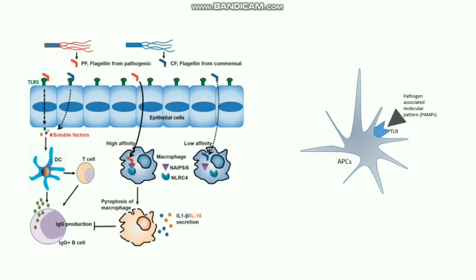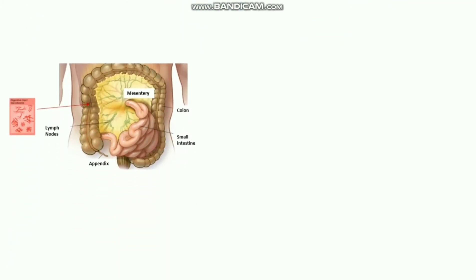Before that, we need to know a little anatomy — exactly where this gut microbiota is located. Here is the large intestine and the digestive tract, and in this digestive tract in the large intestine there are trillions of microbiota. Here is the mesentery, and in the mesentery there is a lymph node known as the mesenteric lymph node, which plays an important role in protecting the gut microbiota, as these mesenteric nodes contain a lot of immune cells.